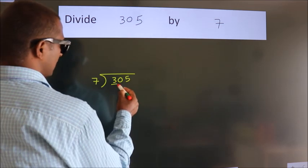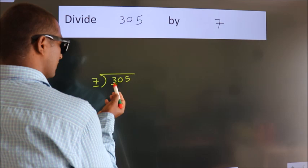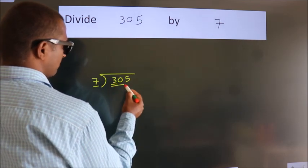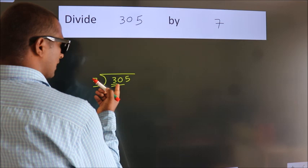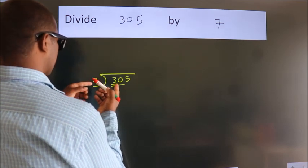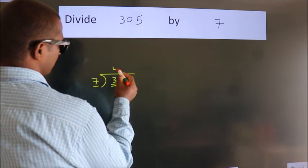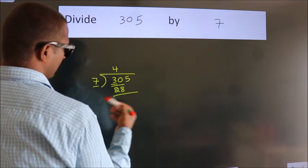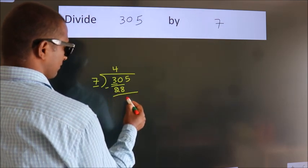Here we have 3. Here, 7. 3 is smaller than 7, so we should take 2 numbers: 30. A number close to 30 in the 7 table is 7 fours, 28. Now we subtract and get 2.